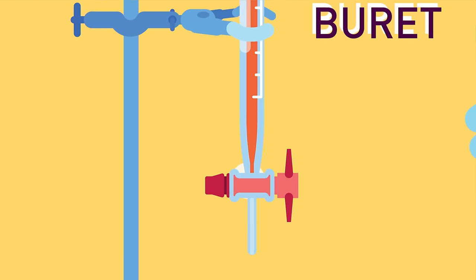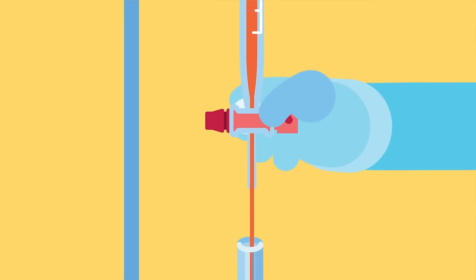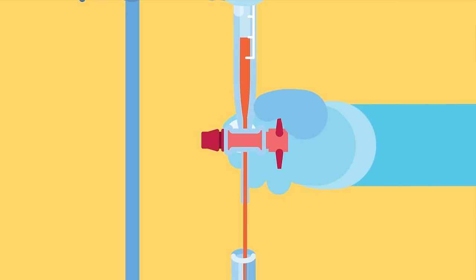Burette. A long glass graduated tube, with a tap around it. A burette is used for dispensing an accurate volume of a liquid, and measuring its discharge.